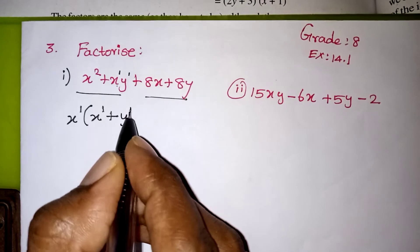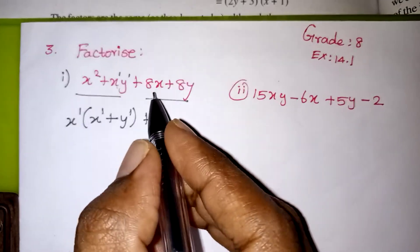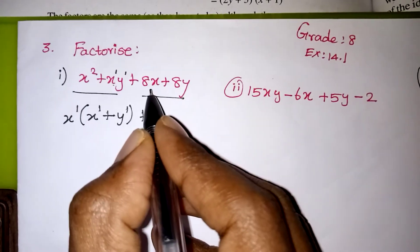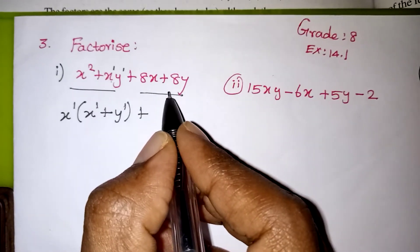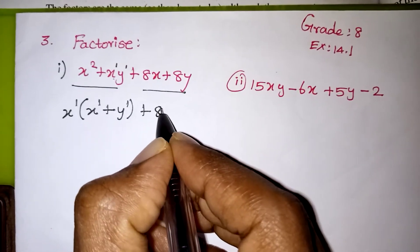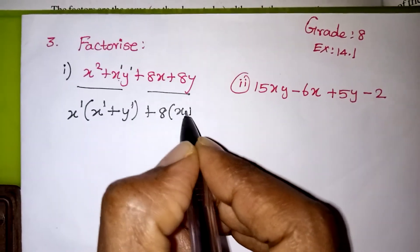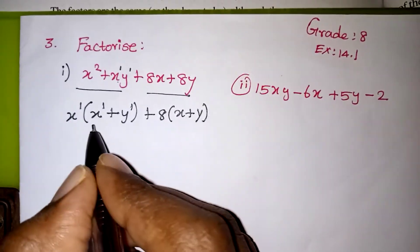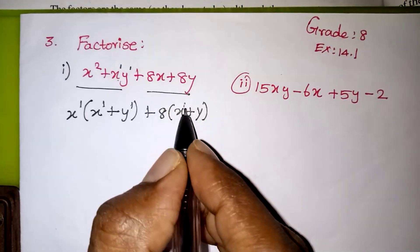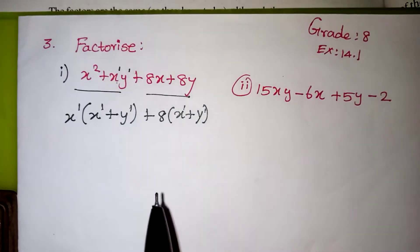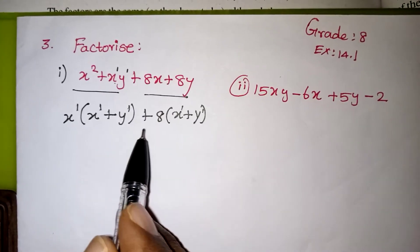Now for the second pair: 8x and 8y. There is no x common, no y common, but 8 is common for both terms. We take 8 outside, so the remaining is x + y. Now x power 1 · y power 1 is nothing but x + y, so both brackets contain (x + y).